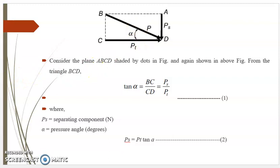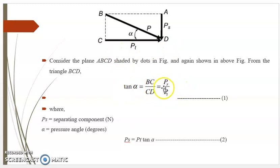Consider the rectangle ABCD shaded by dots in the figure. AD is the separating force PS, CD is the tangential force PT, and BD is the resultant force P, with angle alpha. From triangle BCD, tan(alpha) equals BC divided by CD, which equals PS divided by PT. Therefore tan(alpha) equals PS divided by PT — equation 1. Therefore PS equals PT·tan(alpha) — equation 2.